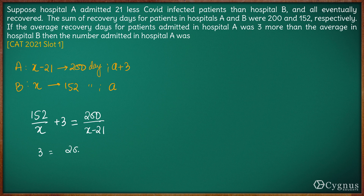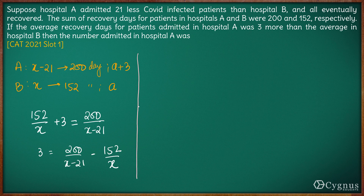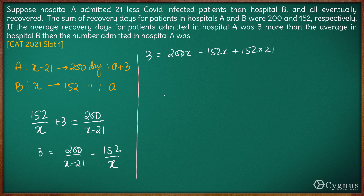So 3 equals 200/(x−21) minus 152/x. Taking the LCM of the right-hand side, we get 200x minus 152(x−21) over x(x−21), which expands to 48x plus 3192 over x(x−21). This will give us a quadratic equation, and the calculation becomes slightly tedious because of the 152 times 21 term.